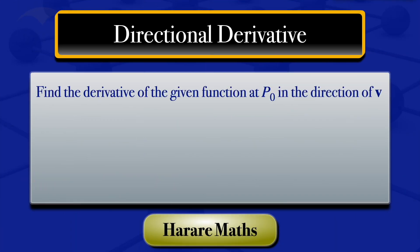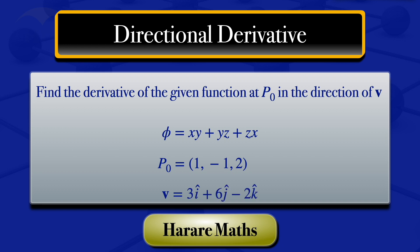In this video, I'm going to find the directional derivative of the scalar field φ, which equals xy + yz + zx, at the point P₀ = (1, -1, 2), in the direction of the vector v = 3i + 6j - 2k.